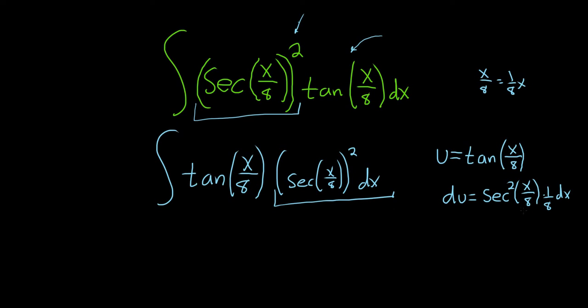We don't have a 1 eighth in our integral. So if we multiply both sides by 8, that will get rid of the 1 eighth. So that will give us secant squared of x over 8 dx. So now we have this. And we have this.